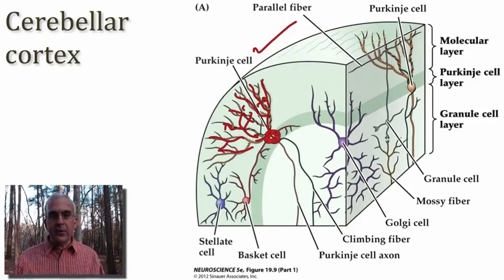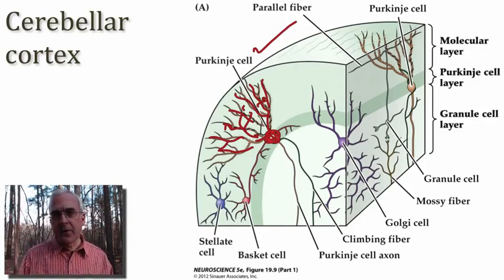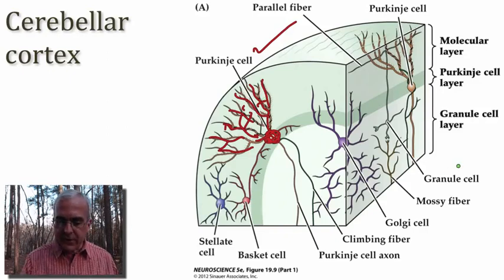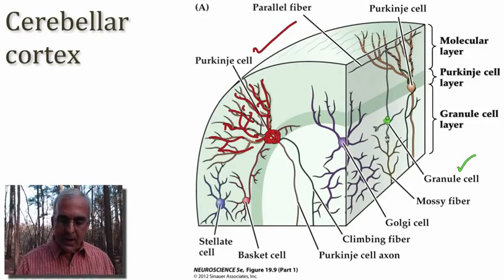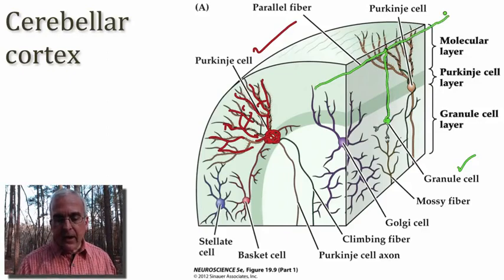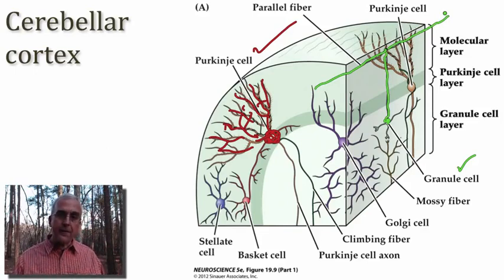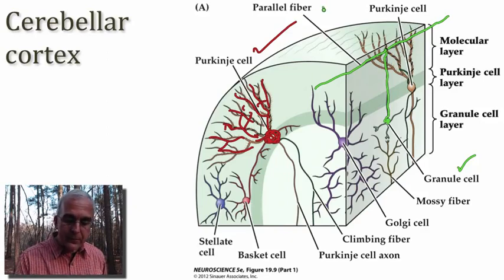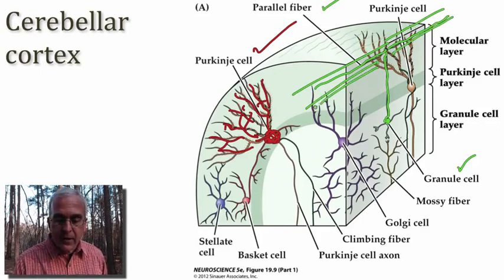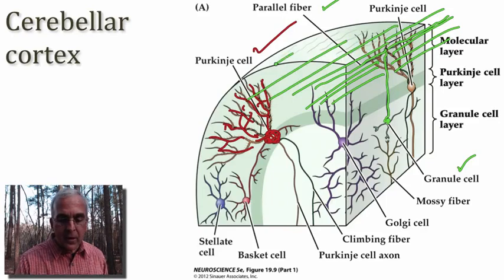The Purkinje cell is the principal integrator of inputs coming into the cerebellar cortex, and it's receiving massive input from the axons of really tiny cells that account for the majority of cells in the cerebellum. These are the granule cells of the cerebellum — very small neuronal cell bodies that grow an axon out towards the outer part of the cortex, where it splits into two parts. These two parts grow for considerable length in parallel along a folium that forms the folding of the cerebellar cortex. They are called parallel fibers because they grow parallel to one another and parallel to the organization of the folia.